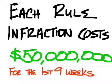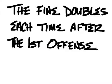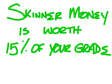Each rule infraction costs fifty million dollars, which is going to be one of these. So fifty of these is what you're going to have to pay for every time you break a rule. The fine doubles each time thereafter. So it's fifty, hundred, two hundred, four hundred, and so on.